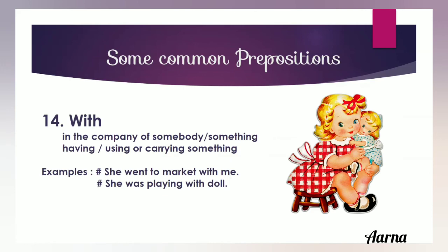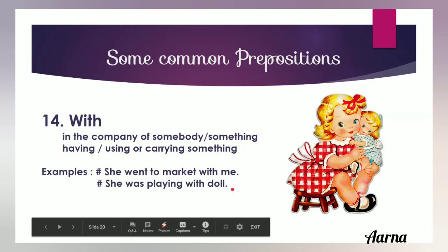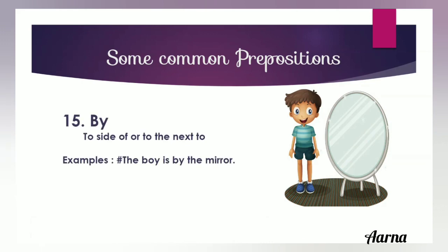The next preposition is 'with'. It is used when something is in the company of somebody, or for having, using, or carrying something. For example, 'she went to the market with me' — she went in my company. 'She was playing with a doll' — she is using or carrying it, so we use 'with'. 'By' means to the side of or next to — you can consider 'by' as a synonym of 'beside'. For example, 'the boy is by the mirror' or 'the boy is beside the mirror'.